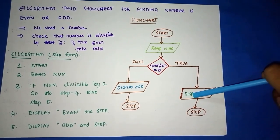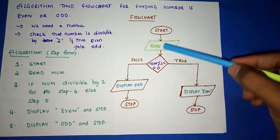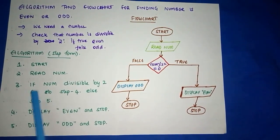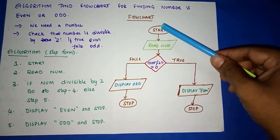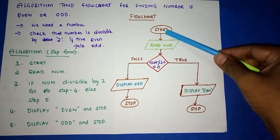And the condition - see here we are checking a condition, that condition is written in a rhombus. Now we'll check. First step is START and second step is...